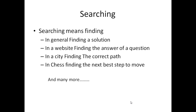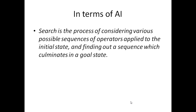In terms of artificial intelligence, search is the process of considering various possible sequences of operators applied to the initial state. That means we must have some initial state from where we will start, and we have a lot of possible sequences of operations — like moving from A to B, A to C, A to D, A to E, and so on. After applying those possible sequences of operations to the initial state, how we reach the goal state is basically searching. So searching is the process of moving to or finding the goal state, starting from the initial state and following some possible sequence of operations.